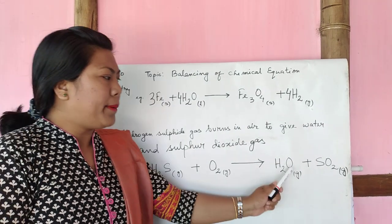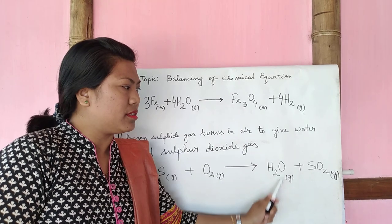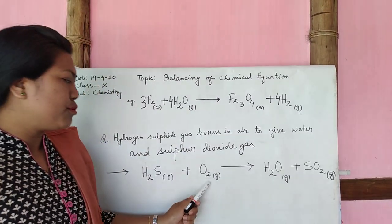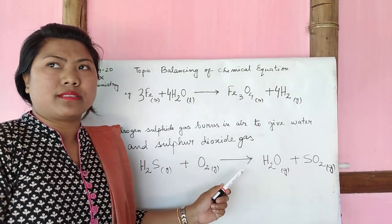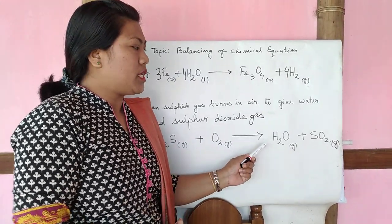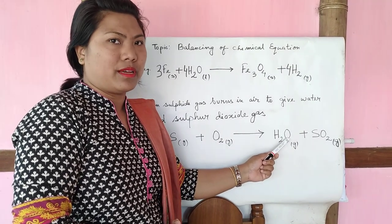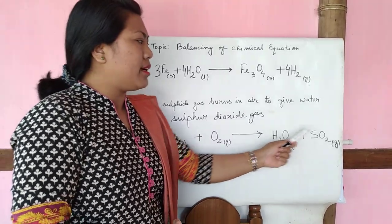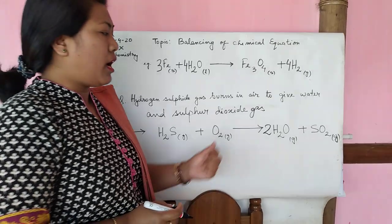You have to count the total number of oxygens on the product side together. You have three total, and two on the reactant side — so three and two is not balanced. To make it balanced, use a simple trick: make it an even number. Here you have two and one, adding together gives three.